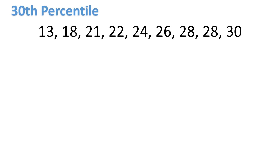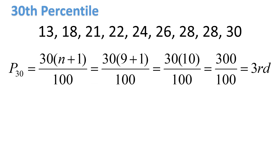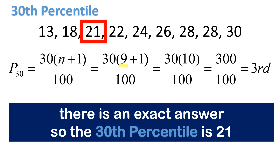Let's have Example 1: find the 30th percentile of the given data. Remember, arrange the data in ascending order — from lowest to highest. Then for Step 2, find the location of P sub 30: 30 × (N + 1) ÷ 100. N is 9 because there are 9 numbers from 13 to 30. So 9 + 1 = 10; 10 × 30 = 300; 300 ÷ 100 = 3. Since 3 is a whole number, we count to the 3rd position: 13, 18, 21. So 21 is our 30th percentile.